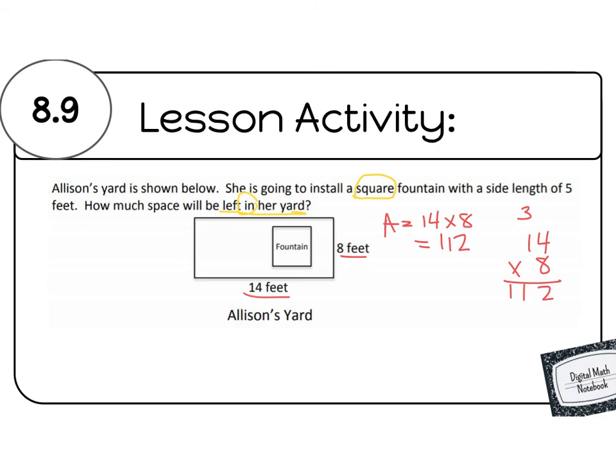Now we can find the area of the fountain because we want to know how much space the fountain is going to take up. So it tells us that it is a square fountain with a side length of 5. So that must mean that the area is going to be 5 times 5, which we know is 25. So if the whole yard is 112 and the fountain takes up 25, here's your job friends, how much space will be left over in her yard after we put in the fountain? Fill in this box and type your notes in your digital math notebook.